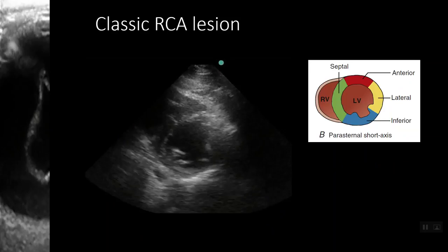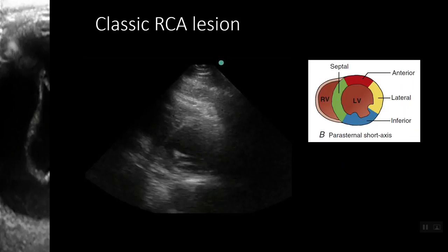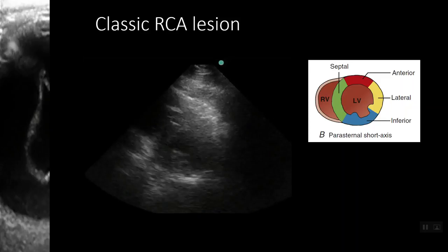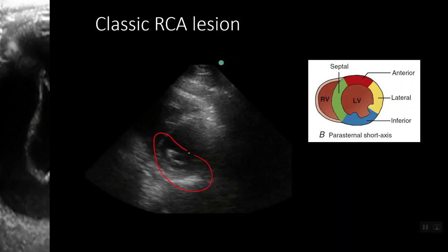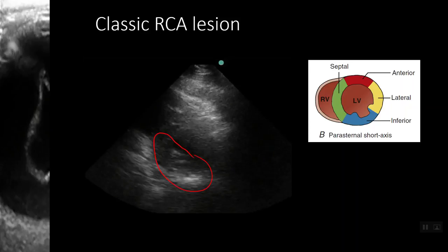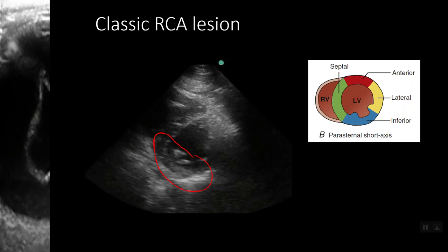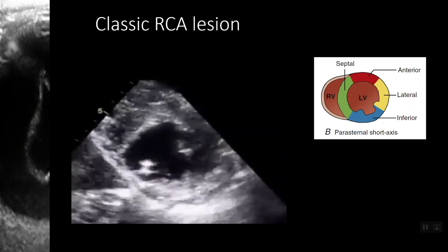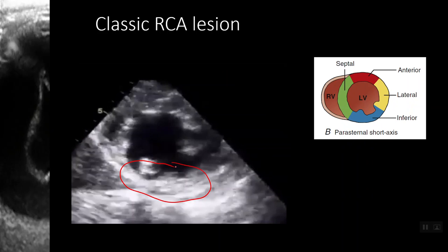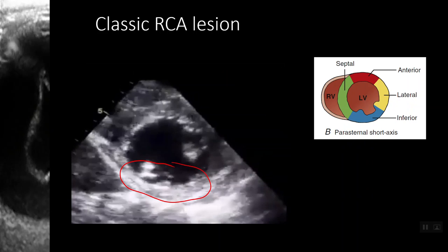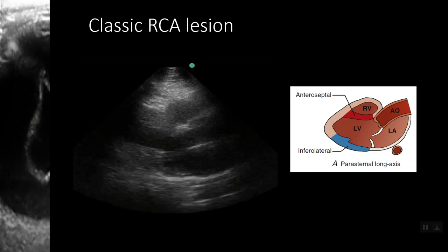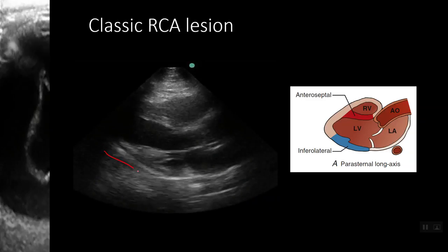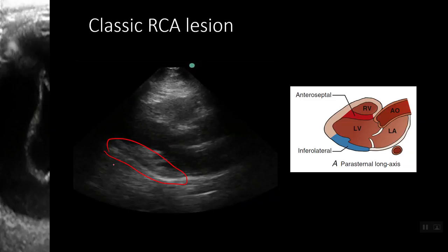Moving on to our right coronary artery: our RCA generally perfuses the inferior aspect of our heart and can partially perfuse the septal region. Here is an example of inferoseptal akinesis — lack of contraction in the inferior aspect of the heart — consistent with RCA ischemia. Here is a second example of inferior akinesis. The inferior aspect of the heart is also well visualized on our parasternal long axis, where we see hypokinesis of the inferior wall consistent with an RCA lesion.